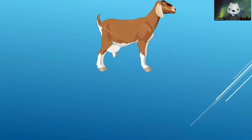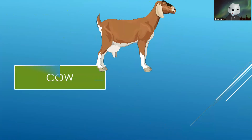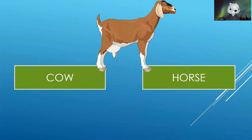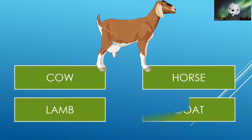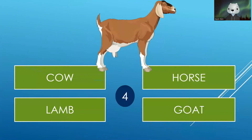Next, identify this one. Cow, Horse, Lamb and Goat. Your time starts now. The correct answer is Goat.